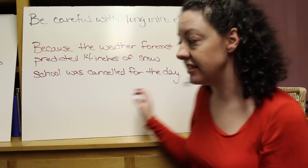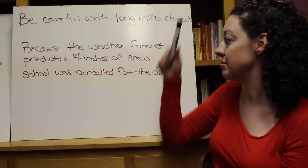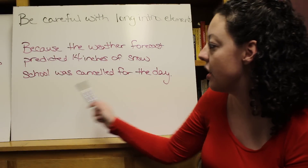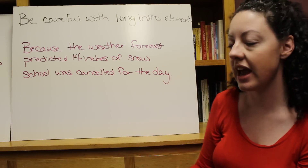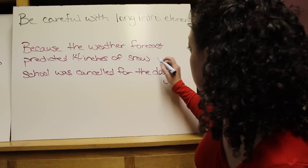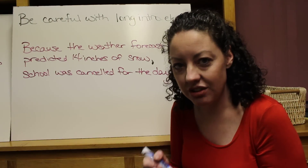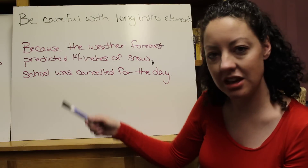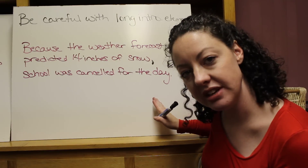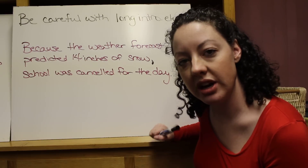My final example is to be careful with long introductory elements. Here's an example: 'Because the weather forecast predicted 14 inches of snow, school was canceled for the day.' 'School was canceled for the day' is a complete sentence, so we need a comma after 'snow.' This is a long introductory element so you might be confused, but checking whether what remains is a complete sentence is an easy way to identify the introductory element.